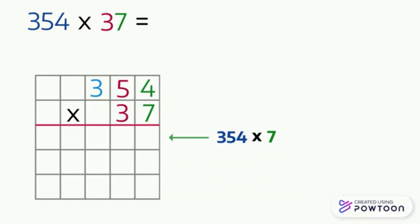As in addition or subtraction, we always start with the ones digit. We multiply 7 by 4 — seven times four equals 28. The number 28 is made up of two tens and eight ones. We write 8 in the ones place column of the answer line, but 2 will be carried up to the top of the tens place column above the 5.